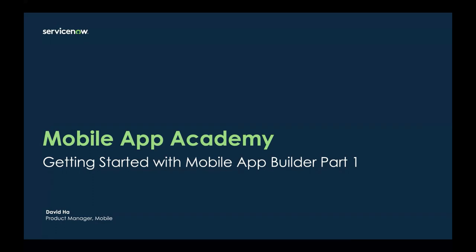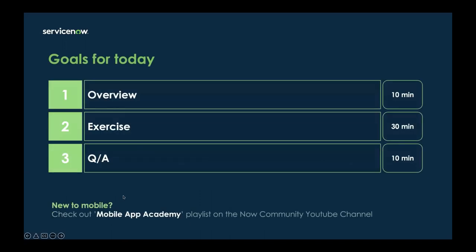Let's kick off today's topic. We are going to be revisiting some topics for the new year that are overdue for an update. Today I'll take you through how you can get started with the Mobile App Builder with the latest updates. This is the first part where I'll show you how to leverage starter templates to quickly build a list and record screen. In the next session, we'll go through how to build new templates from scratch using the Mobile Card Builder.